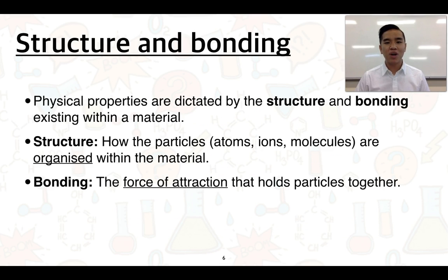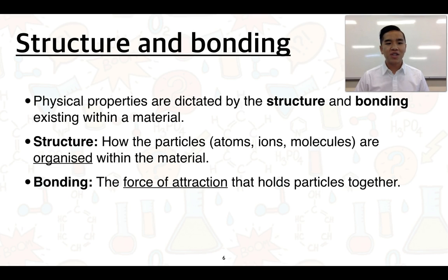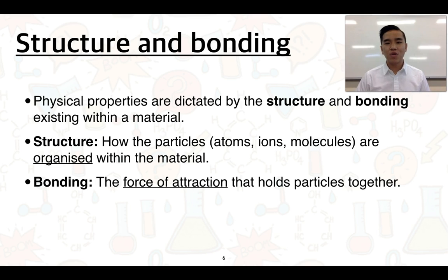The structure and bonding of a material helps determine the various physical properties that we can see in a material. The two words structure and bonding mean completely different things, so it's important that you don't get the two mixed up. The word structure refers to how particular particles — that can mean atoms, ions, or molecules — are organised within the material itself. The word bonding refers to a force of attraction that holds particles together. Structure is about how those particles are actually arranged in three-dimensional space.